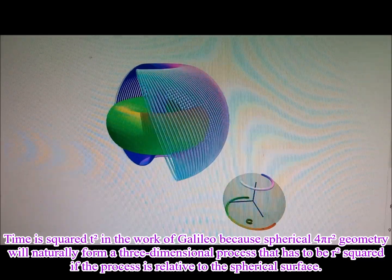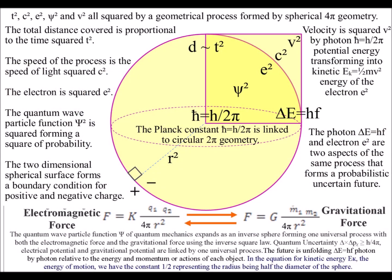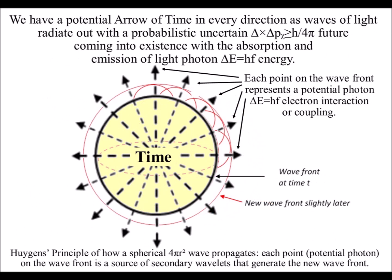In this theory, the photon and electron are two aspects of the same geometrical process of spherical symmetry forming and breaking. This spherical geometry is not embedded in three-dimensional space, but forms the characteristics of three-dimensional space, with the two-dimensional surface forming the fourth dimension of time.